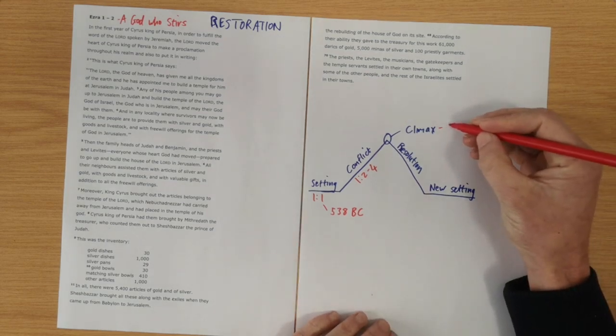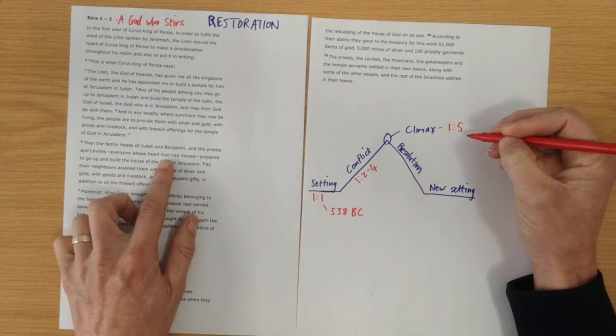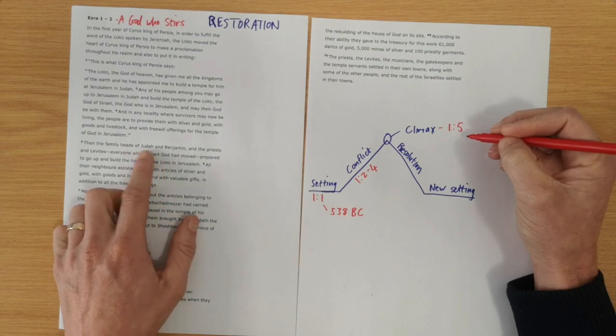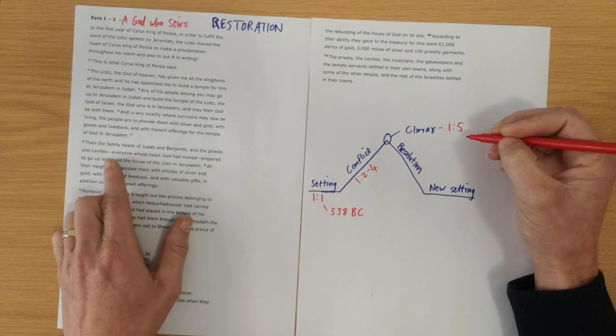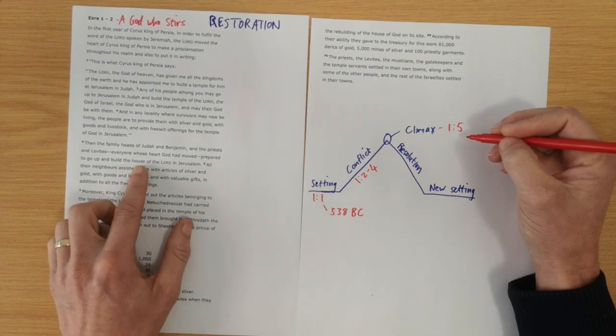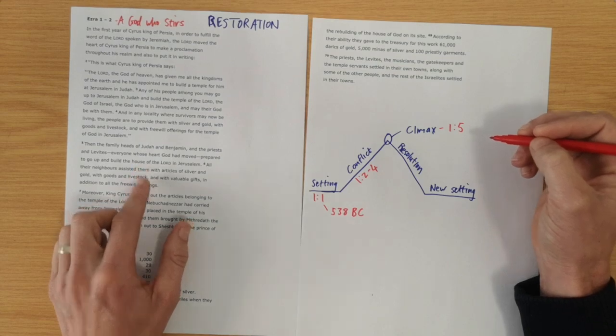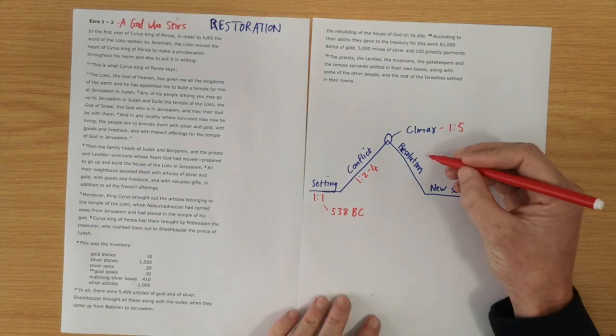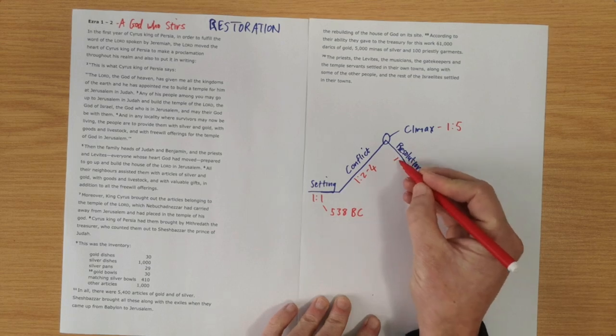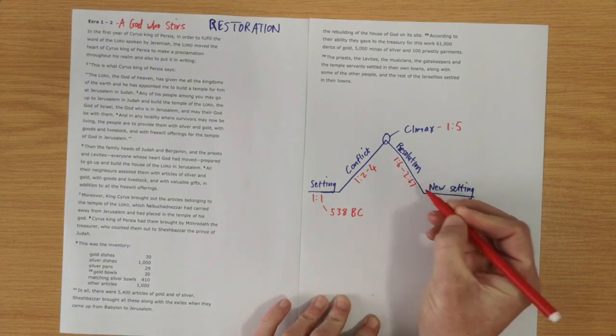Early on in the story, chapter 1 verse 5, we are given the climax. As we see God stirring the hearts of his people, people of Judah and Benjamin and the priests and Levites. He stirred their hearts to go back to rebuild his house in Jerusalem. So, that is what I saw as the climax of the story. And then we see the story resolving itself from chapter 1 verse 6 all the way through to chapter 2 verse 67.